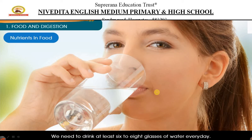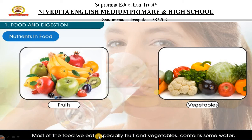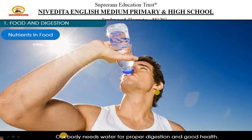Why is water so important to keep our body healthy? Most of the food that we eat, especially fruits and vegetables, contains a lot of water. For example, watermelon, orange, pomegranate, grapes, and apple have so much water in them. When it comes to vegetables, tomato, cucumber, carrot — many vegetables also have a lot of water in them. Our body needs water for proper digestion and good health, which is why we need to drink water on a regular basis.